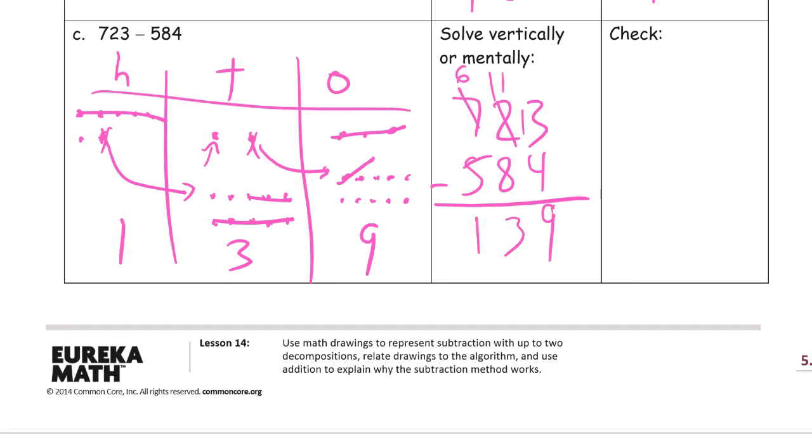And we'll check it one more time. 584, 139. And starting with the ones place, 9 plus 4 is 13, got to compose a 10 with three ones left behind. Looking at our tens place, there's 8 plus 3, that's 11. And there's that one more that I composed, which makes 12. That means I got to compose a hundred with two tens left behind. And then we add up our hundreds, 7. And that's what we started with.